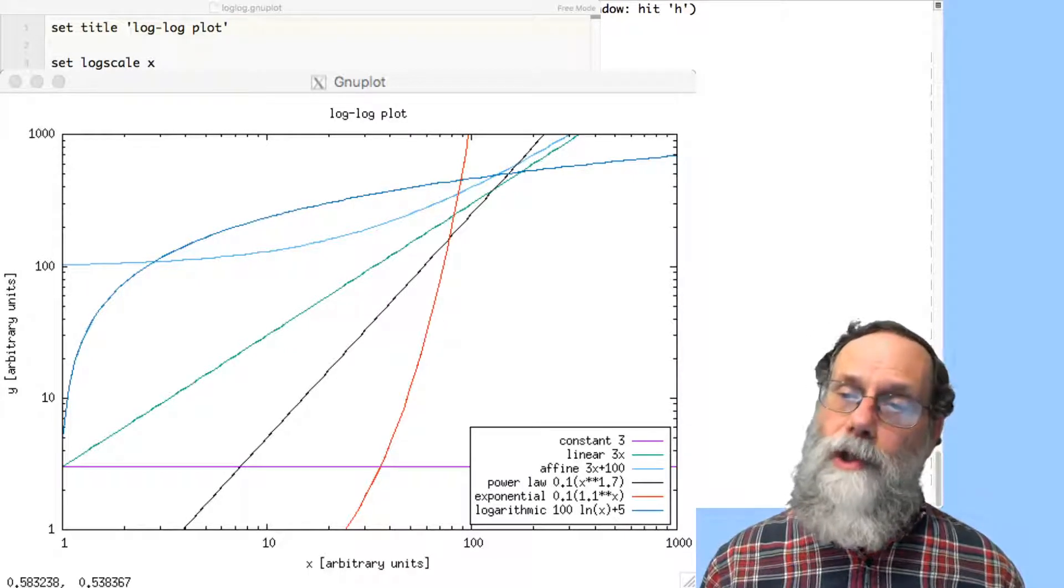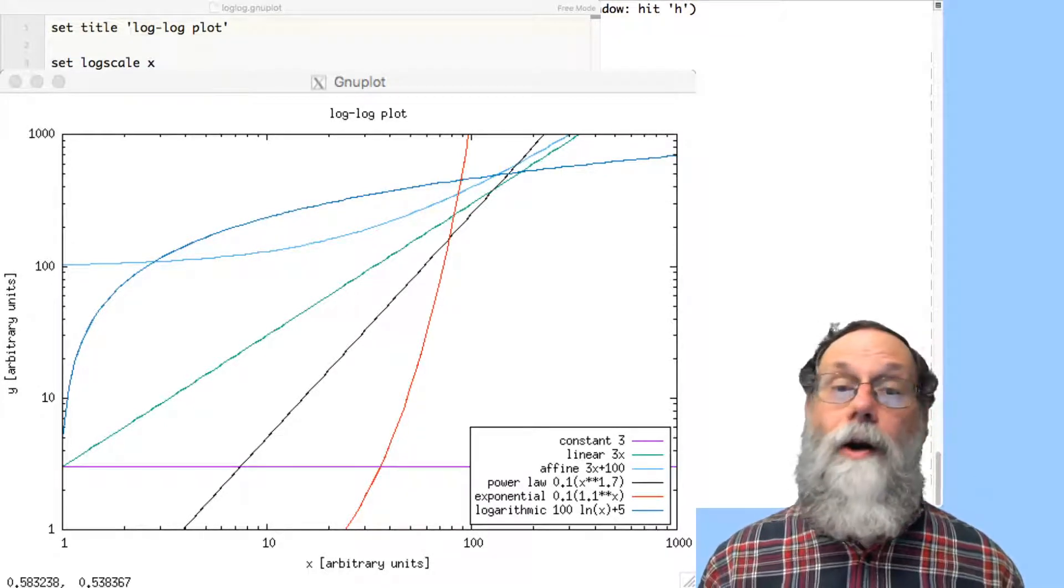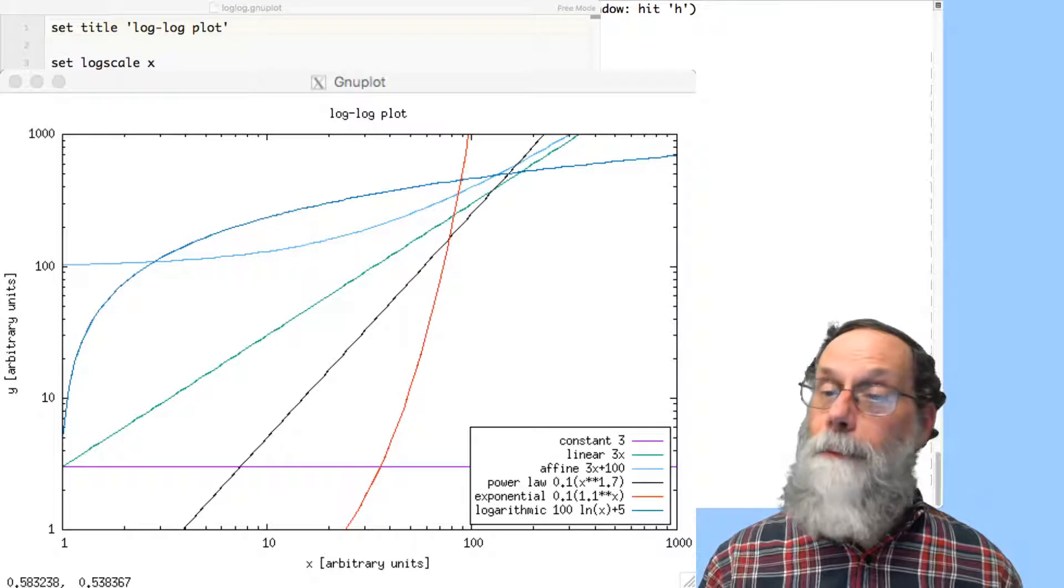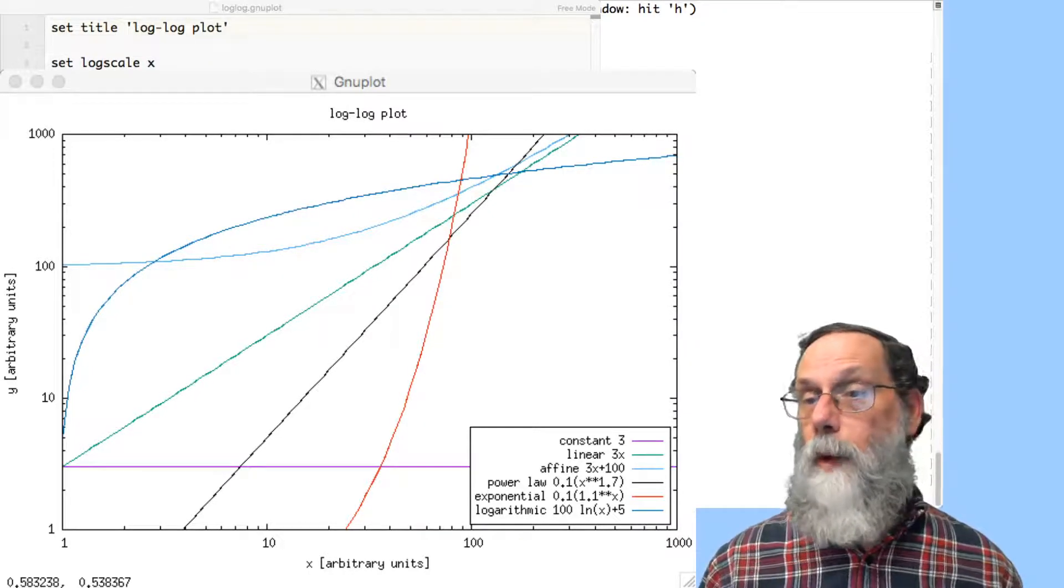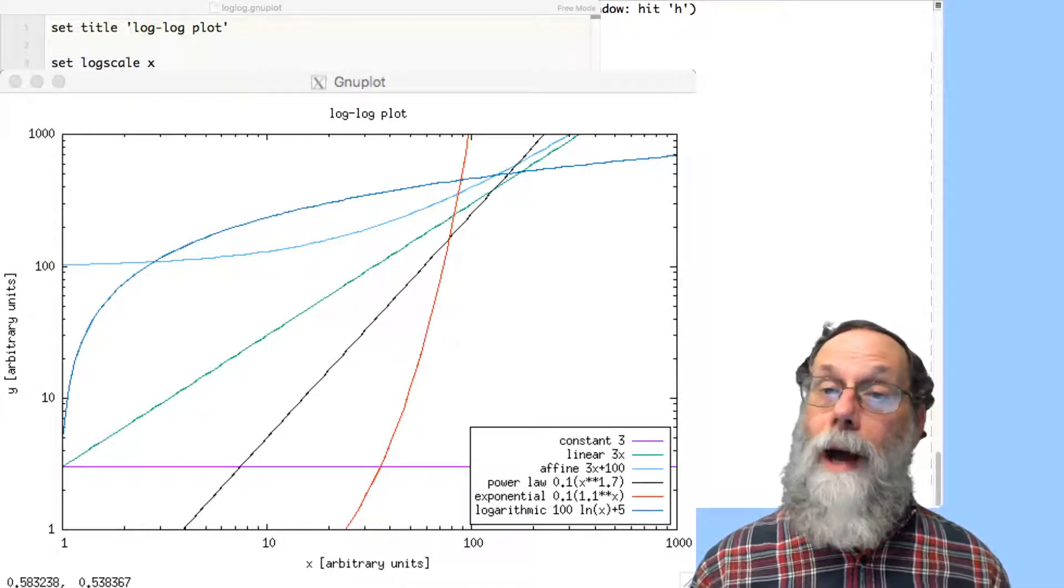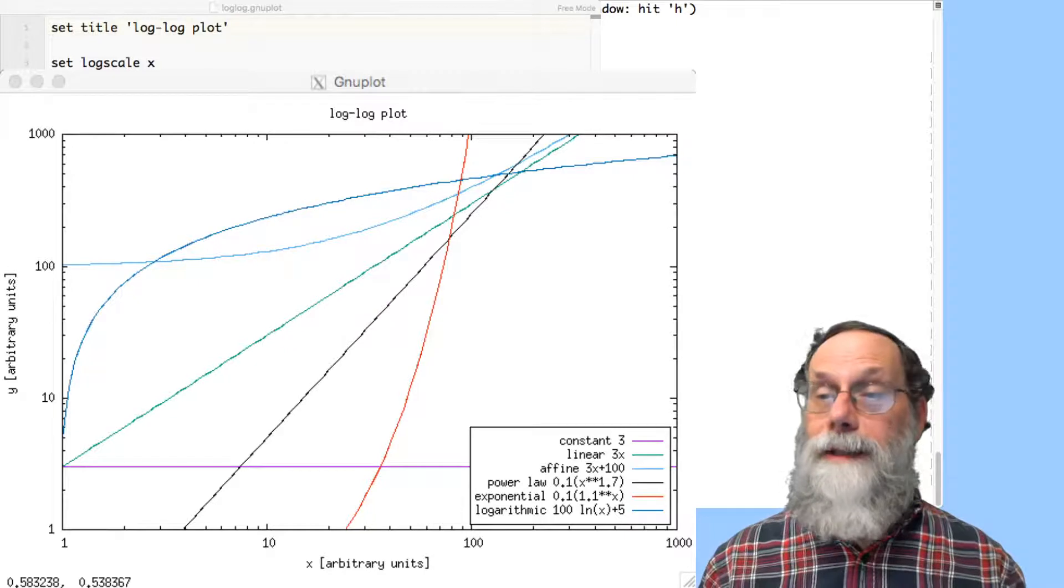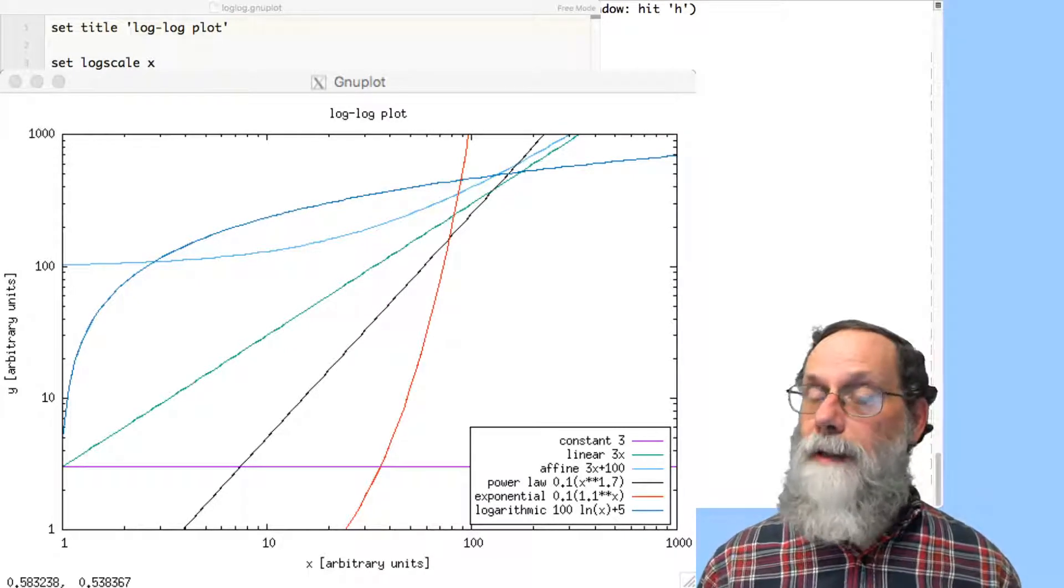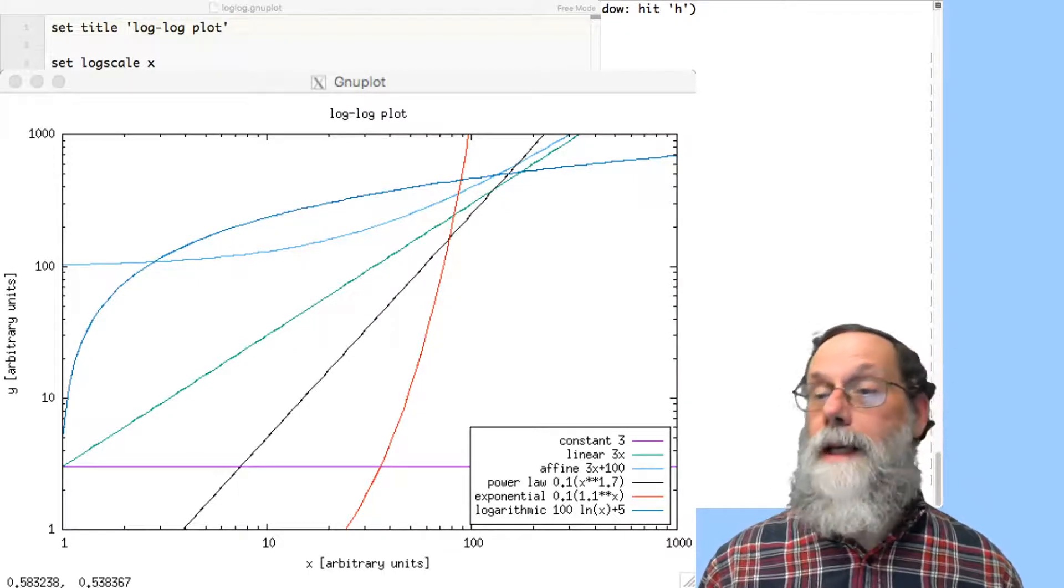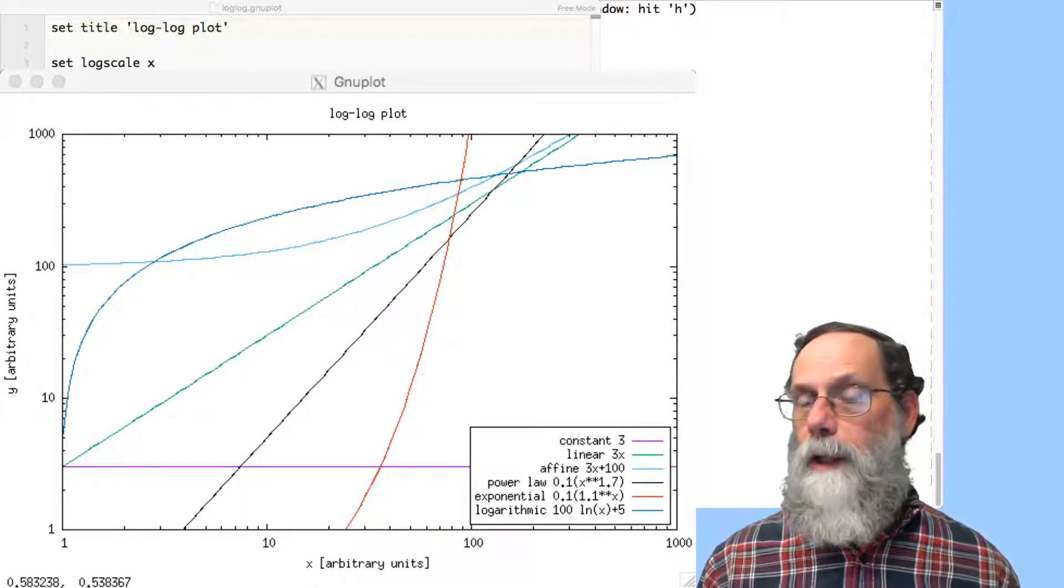You notice it's got a greater slope than the green line or the purple line. The purple line has got a slope of 0. The green line has a slope of 1. And by 1 here, I mean 1 decade per decade. If we move up by a factor of 10 on x, we'll move up by a factor of 10 on y. So the slope on the log log plot is 1. And the power law here, steeper slope, that slope is 1.7. We move up by a factor of 10. Then we move horizontally by a factor of 10. Then we'll move up by a factor of 10 to the 1.7.